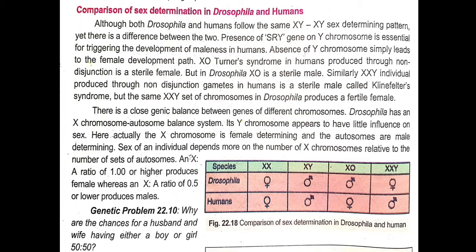But the same XXY set of chromosomes in Drosophila produces a fertile female. In Drosophila, if one extra sex chromosome is added making XXY, a female is produced — and that female is fertile, not sterile. This means she can reproduce.